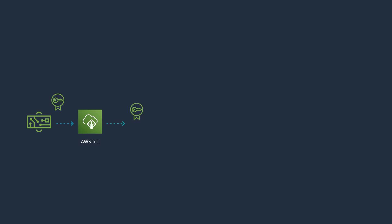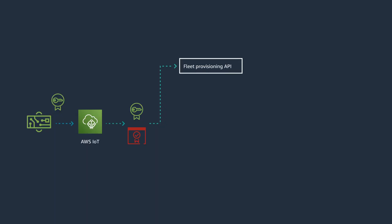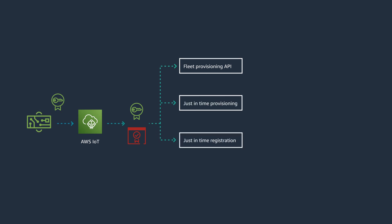Upon a connection request by an unregistered device, AWS IoT Core will confirm the device certificate signature. If that matches the registered certificate authority, the device will be provisioned by one of the provisioning methods. Provisioning flows with AWS IoT Core can vary to meet different requirements: just-in-time provisioning, just-in-time registration, or your custom authentication flow.